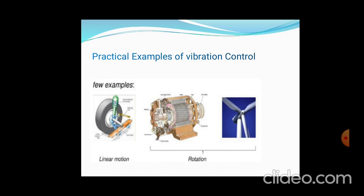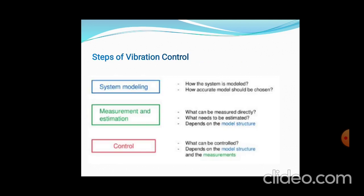These are the practical examples of vibration control. A shaft which carries windings having rotations — linear motions — and one of the diagrams shown here is wind. Wind motors can be controlled by means of air, and the vibrations they carry can be controlled by different methods.